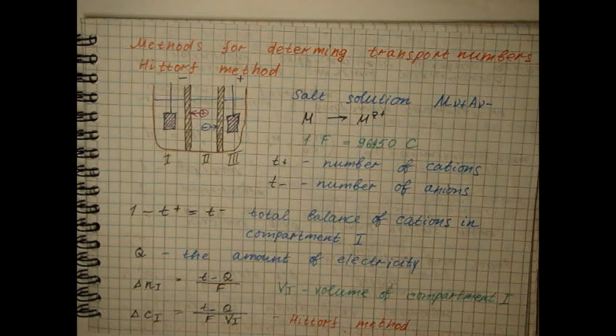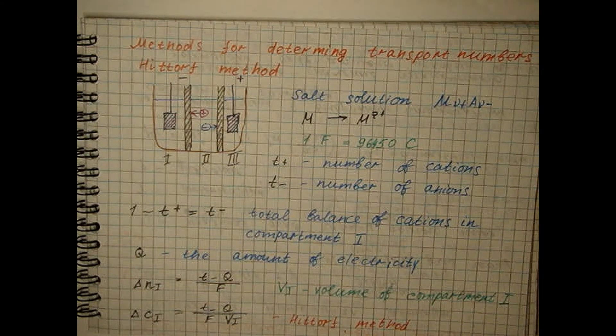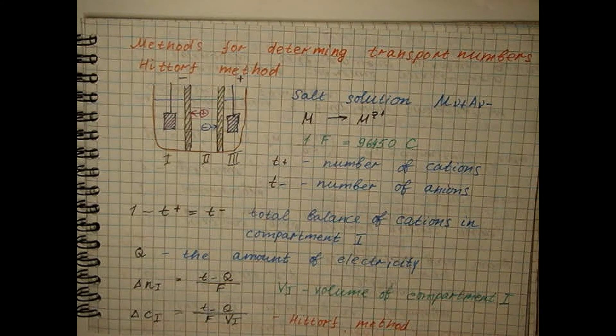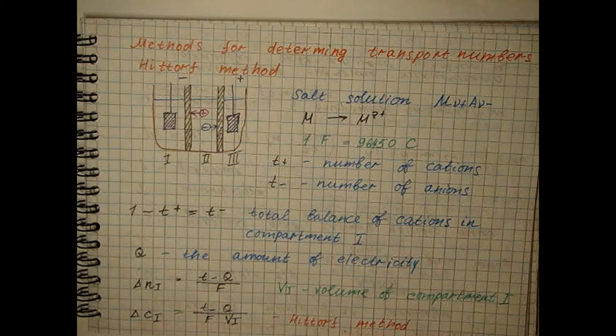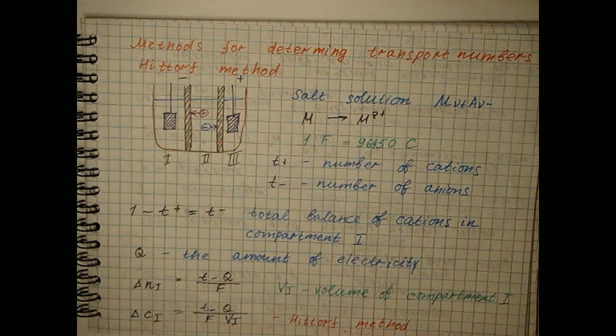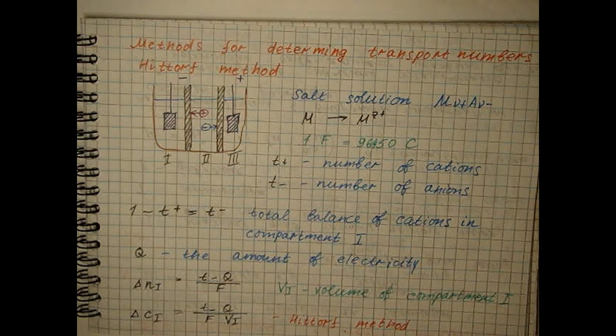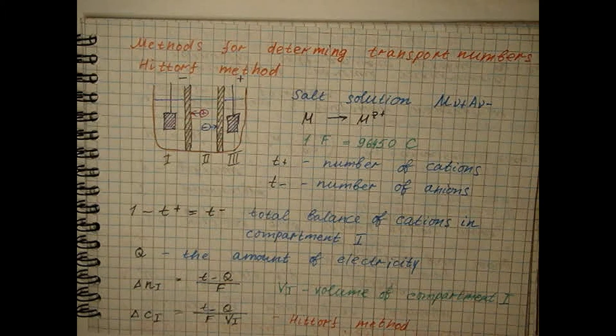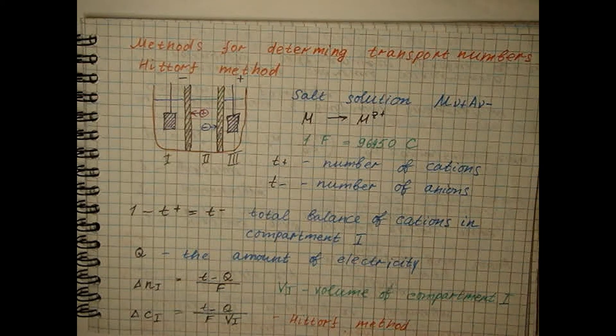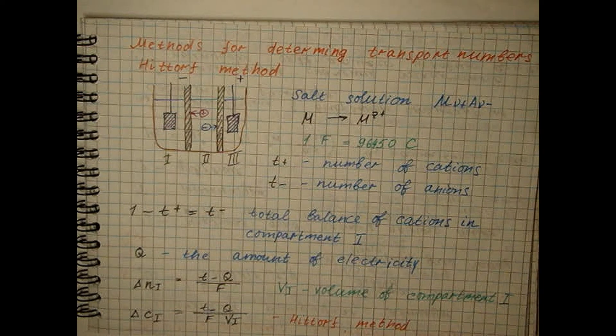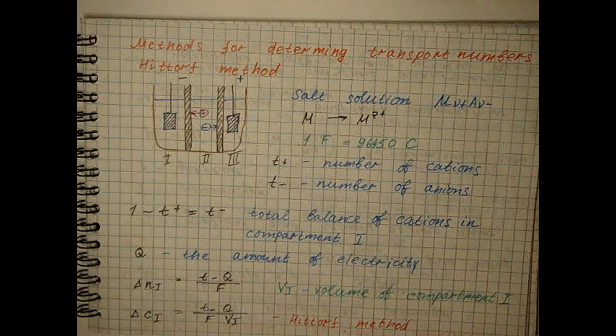Moreover, the change in the amount of solvent in compartment one during electrolysis depends on the design of the measuring cell. Since it is caused not only by the transfer of solvent in the solvate shells of ions, but also by other reasons. Disturbances of hydrostatic equilibrium due to enrichment or depletion of compartment one by electrolysis products, electroosmosis and others, which can lead to mixed results.